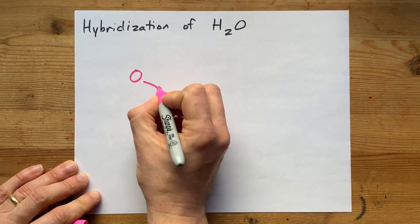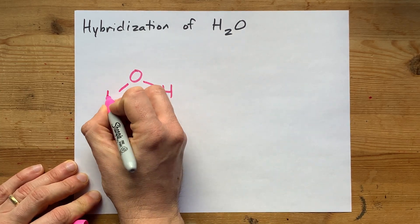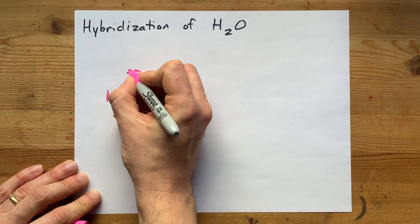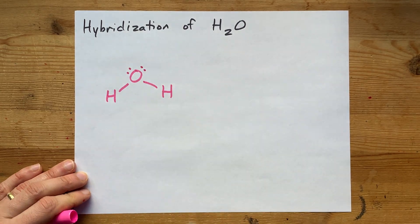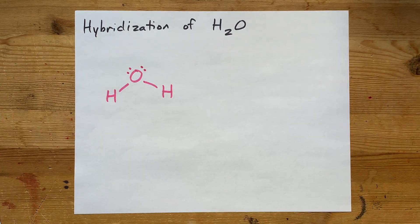I just want to draw you the Lewis structure of water really quickly. You got single bonds to each of the hydrogens. You got two lone pairs on the oxygen. Surely you knew that.